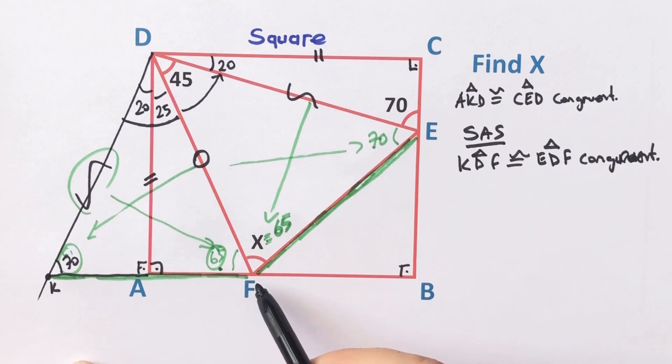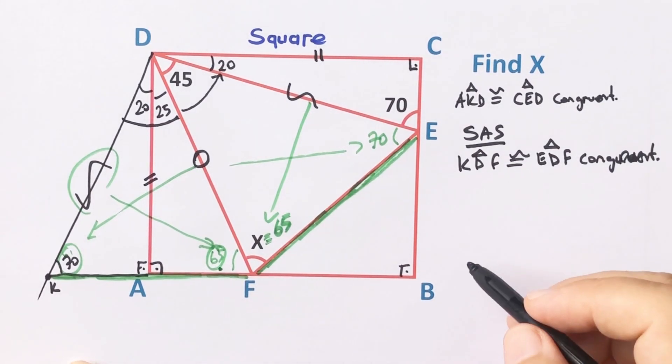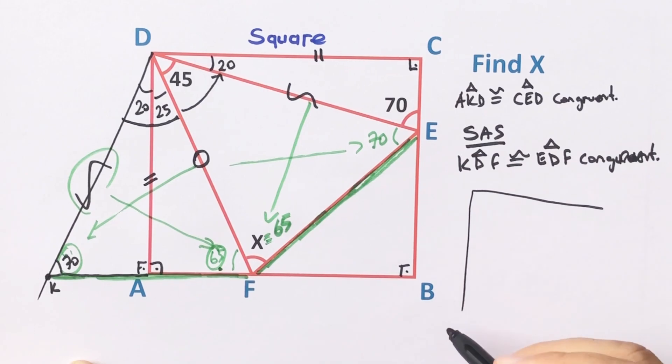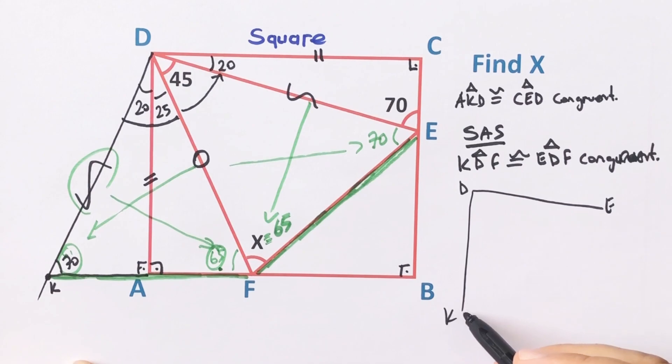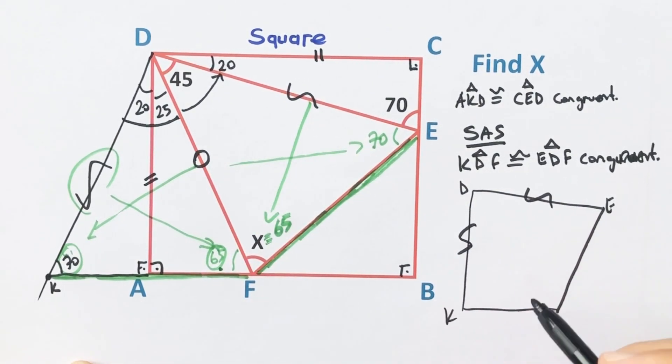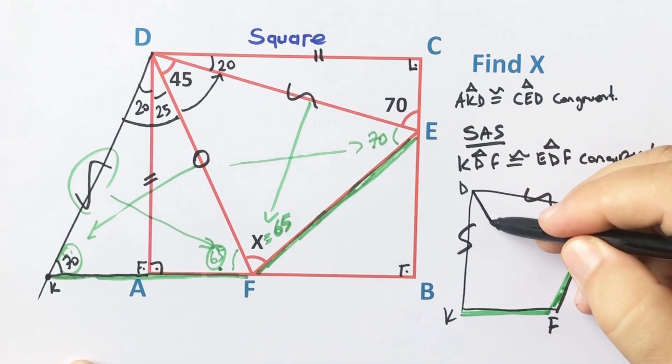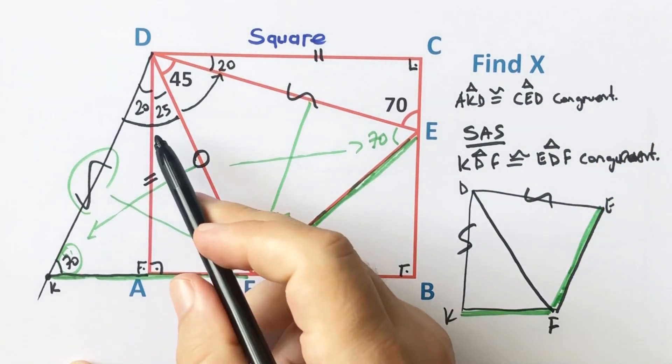Or you can think like this: KDEF is a kite, right? Let's draw here K, D, E, and here is F. These are equal sides and these are green sides.